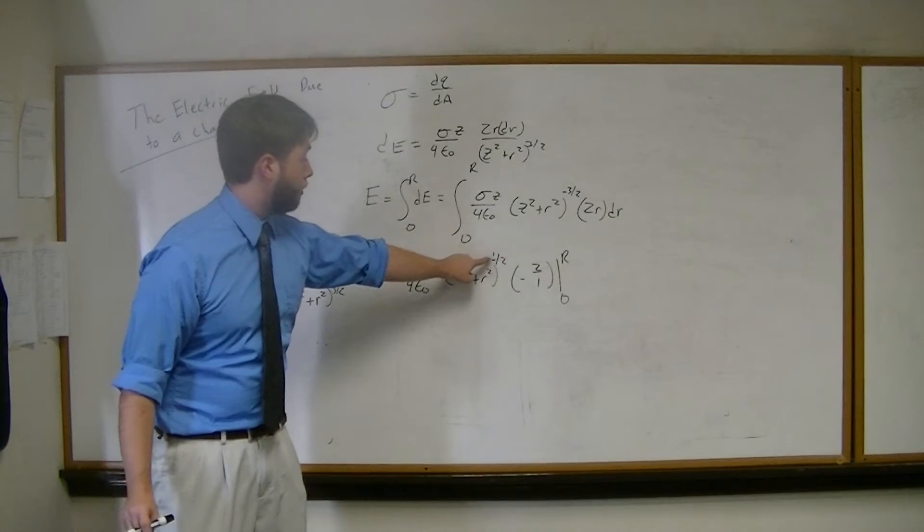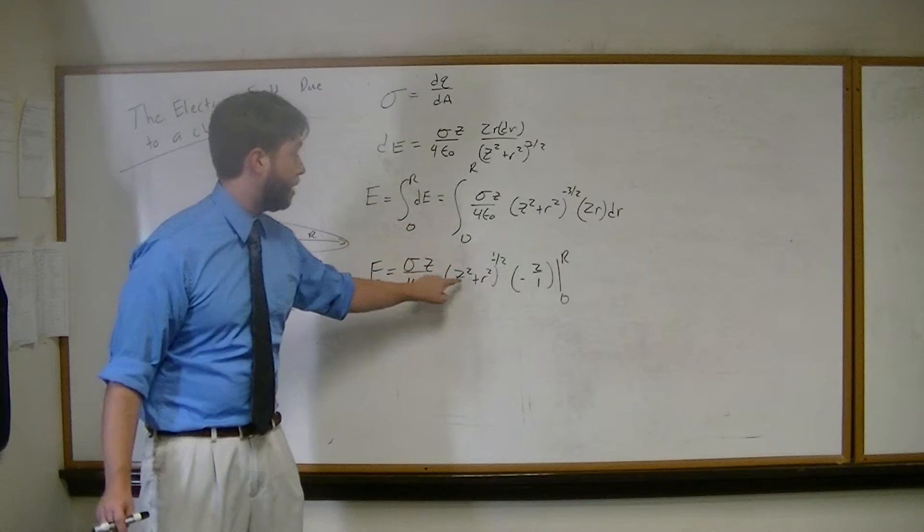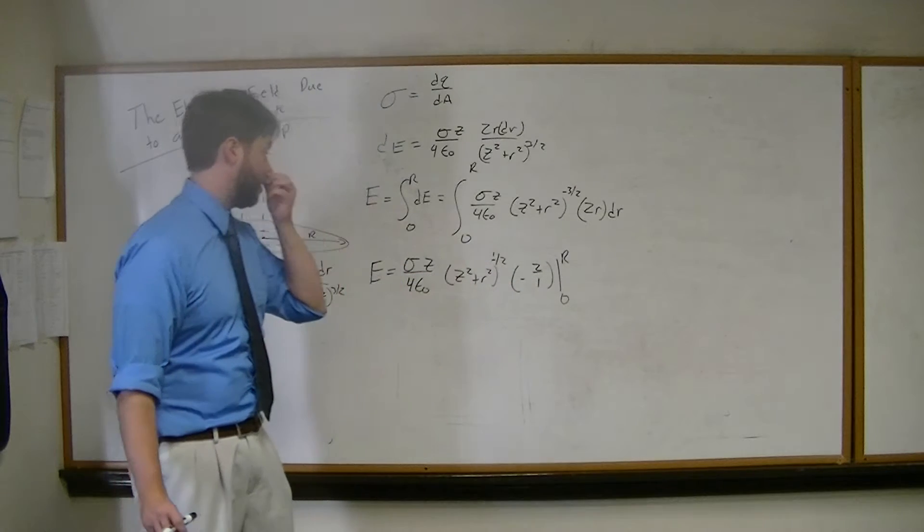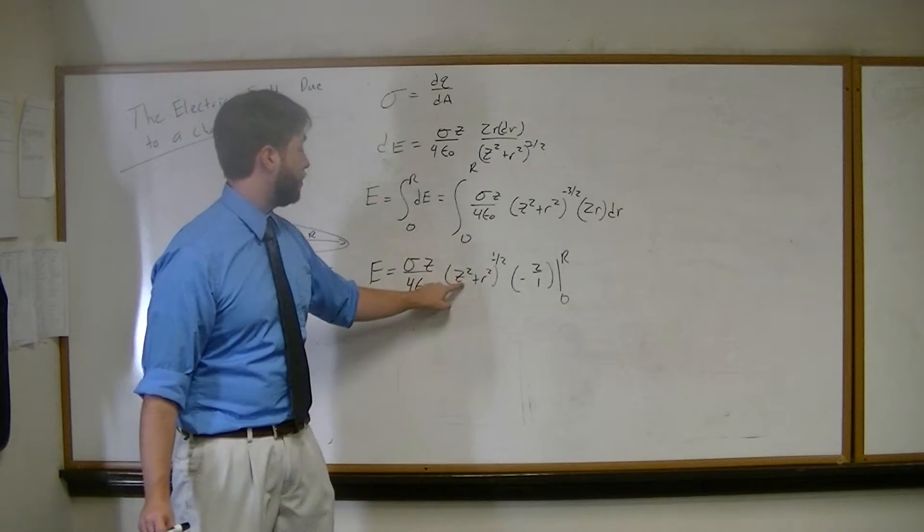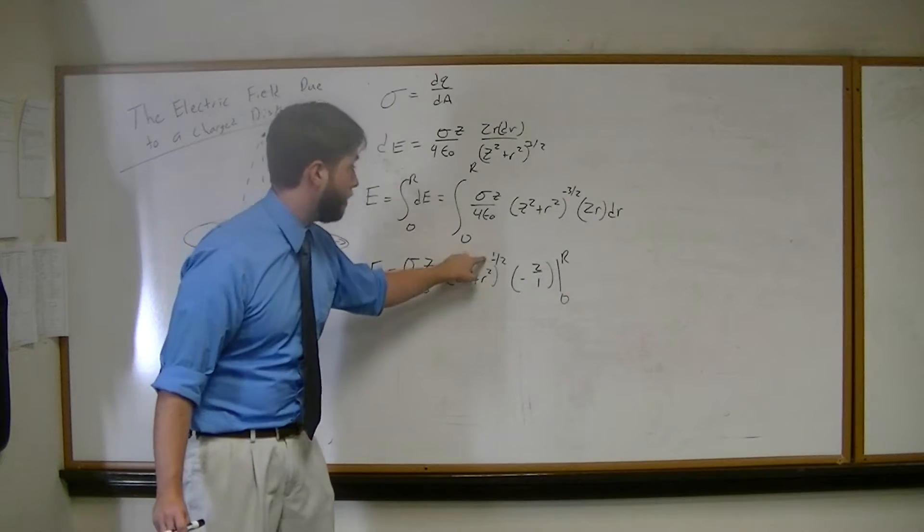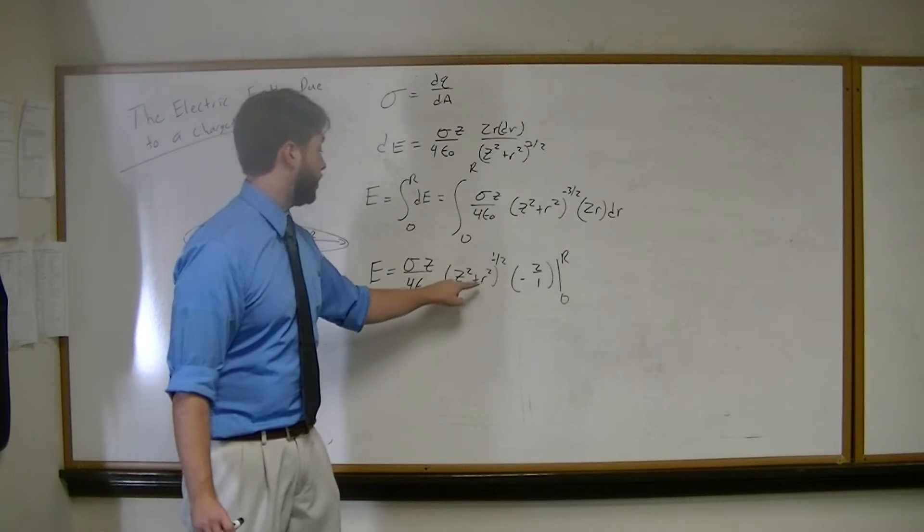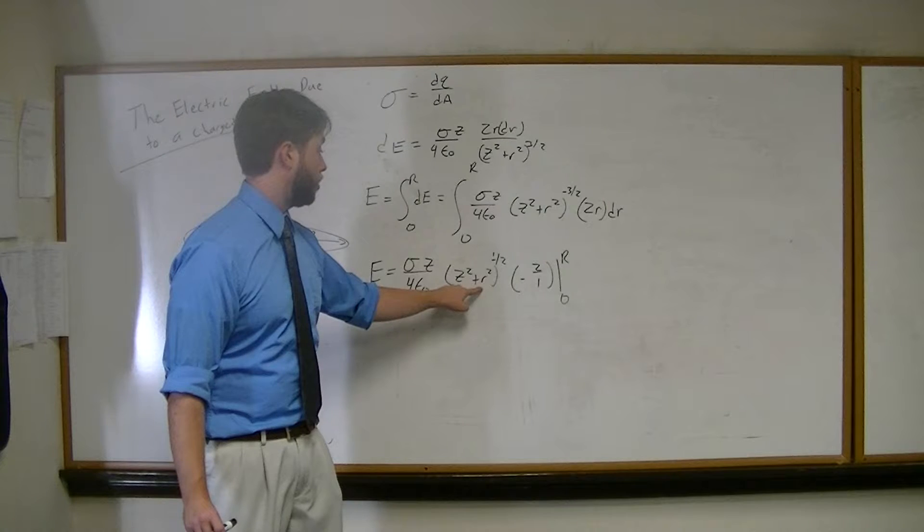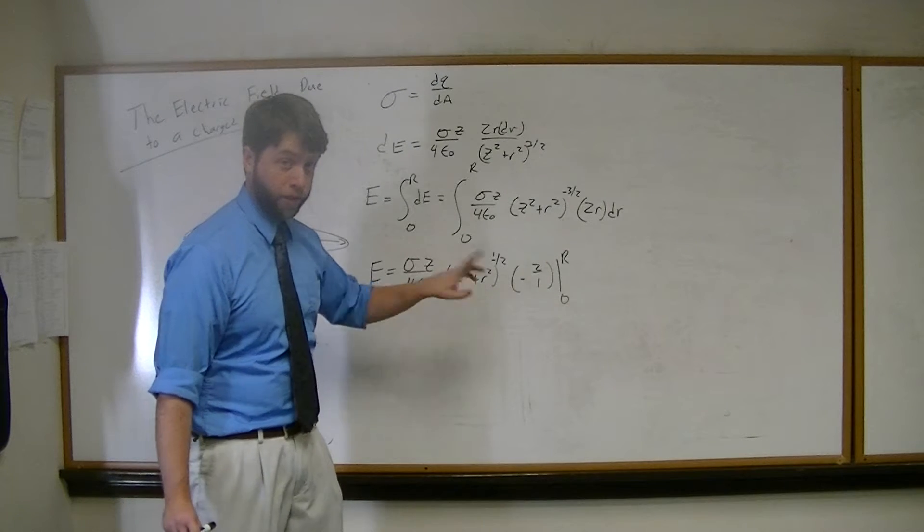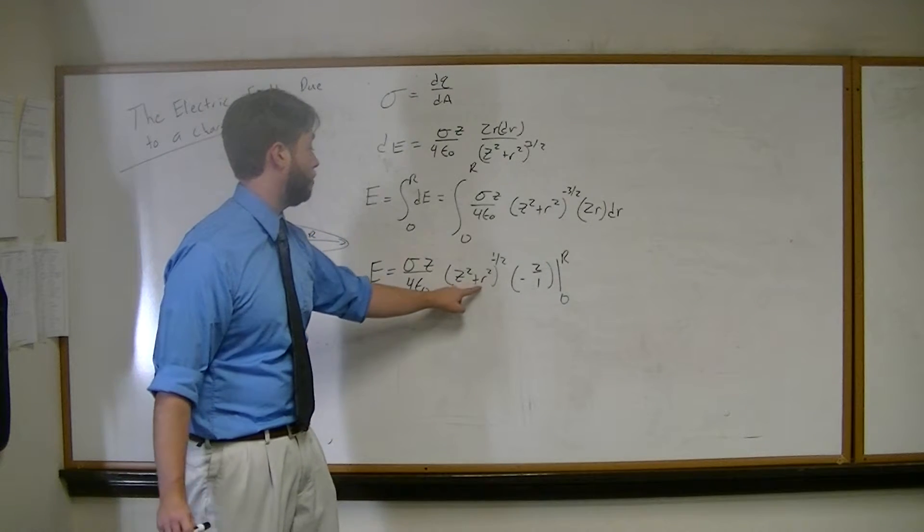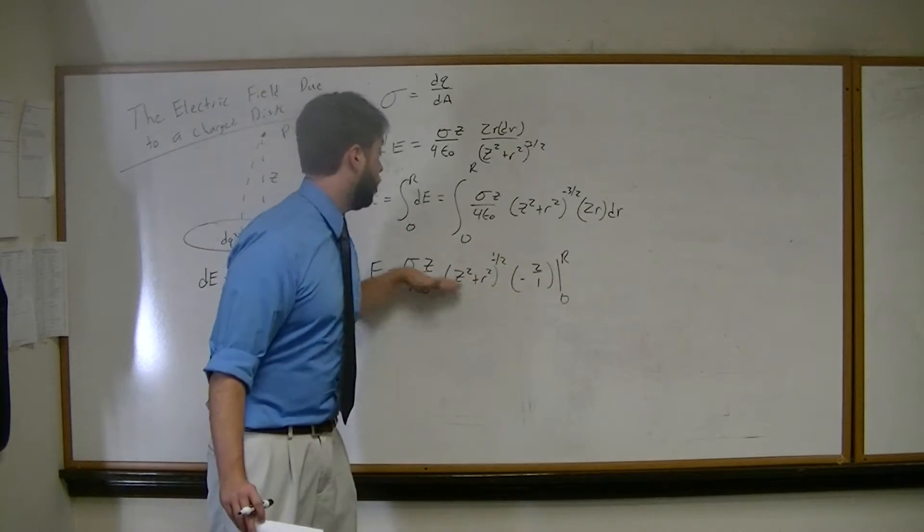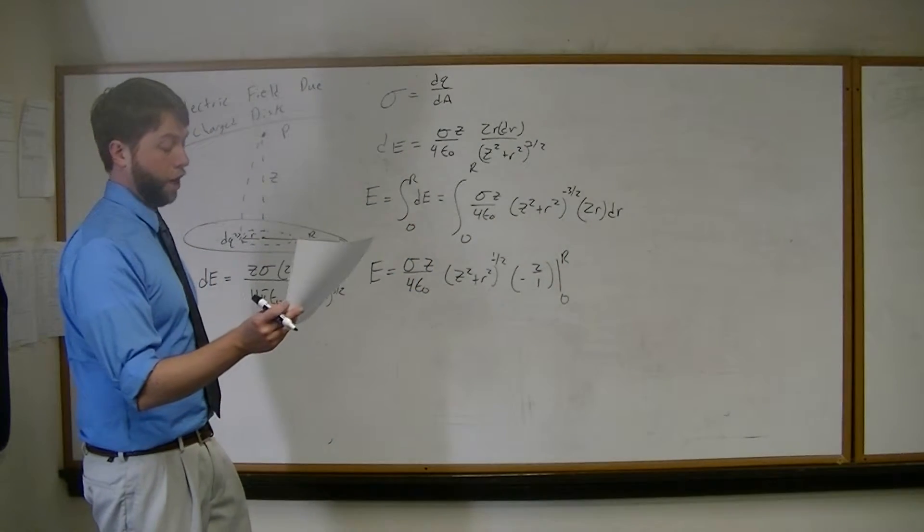Let's check and make sure that we did that right. If we take the derivative here, the minus 1 half is going to come down in front. That's why I have a minus 2 over 1 here so that that's going to cancel out. We would then have z squared plus r squared to the minus 3 halves. We've got that right there. And then the derivative of what's inside would be 2r. So that right there. So this is the correct answer for our integration.